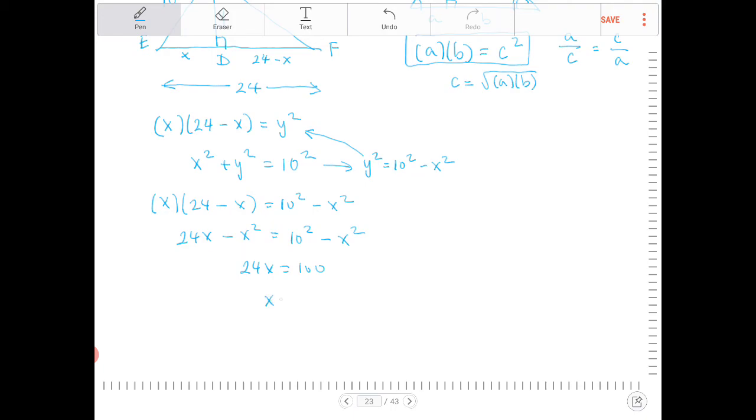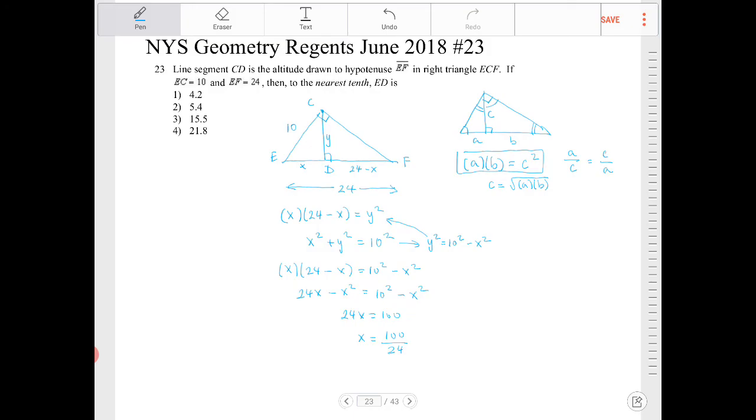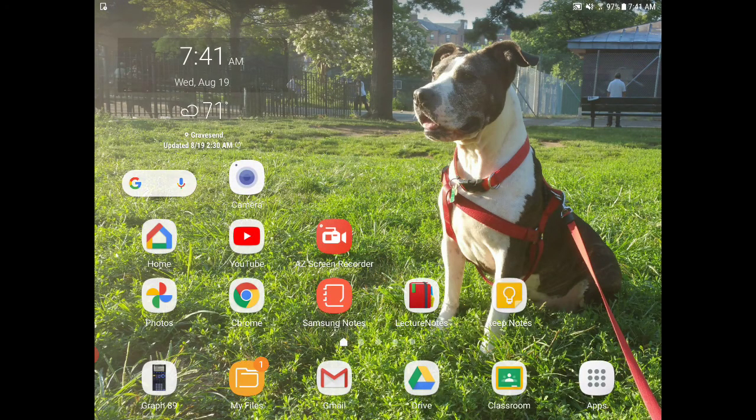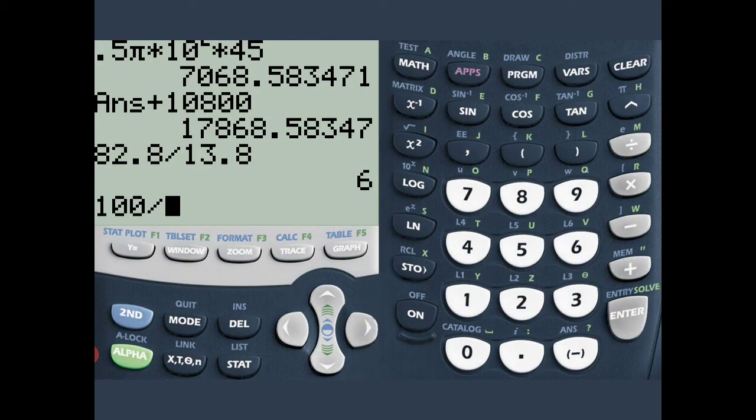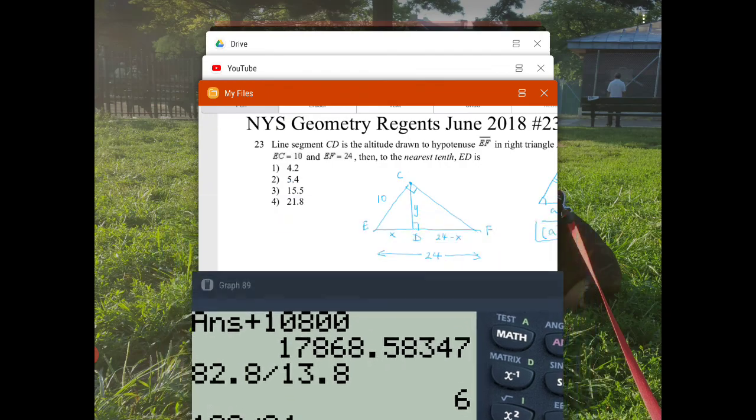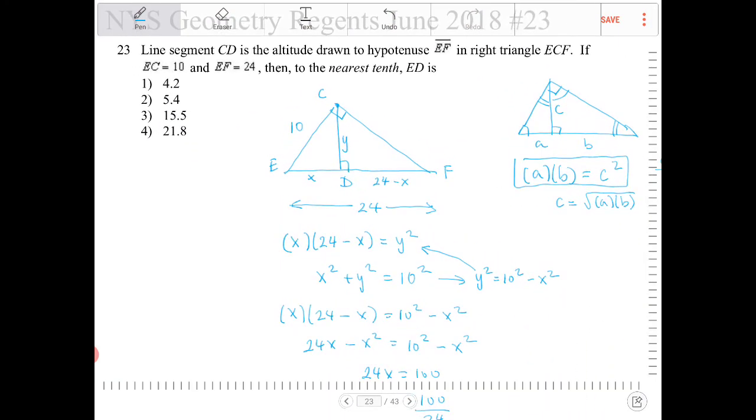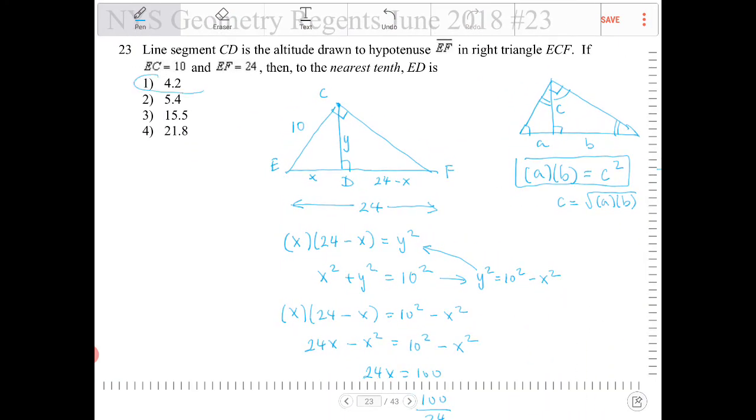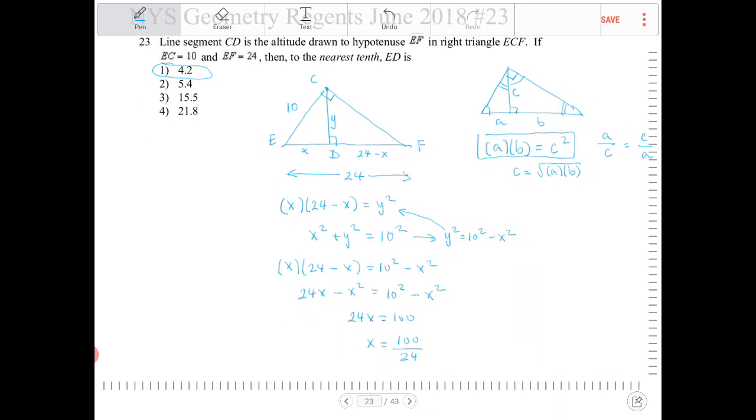And then the last thing to do is just to divide both sides by 24. I get 100 over 24, which will turn into something roughly over 4. Let me just punch this into the calculator. So it's 100 divided by 24. That will be 4.166666. And to the nearest tenth, it will be 4.2. And that is the solution there, 4.2.